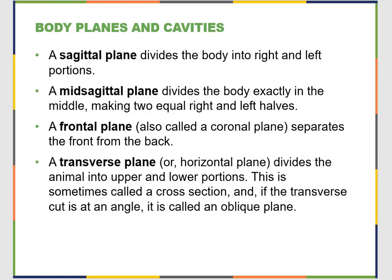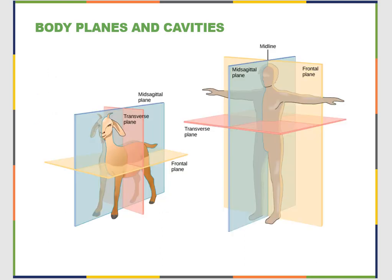As we examine animals and their form and structure, we have to look at body planes and body cavities. Sagittal planes divide a body into right and left — mid-sagittal is a straight cut down the middle giving two equal halves. The frontal or coronal plane separates front and back — that's where the term 'coronal' comes from, where a crown sits. Transverse planes divide top and bottom, like a CAT scan. Cutting at an angle is referred to as an oblique plane.